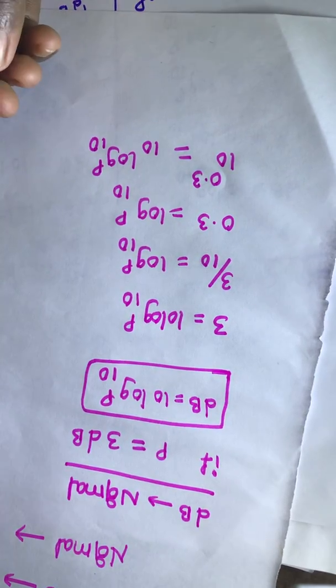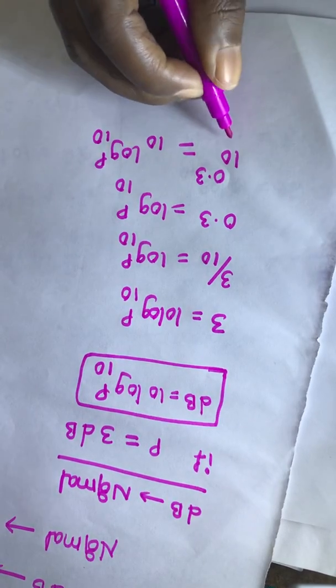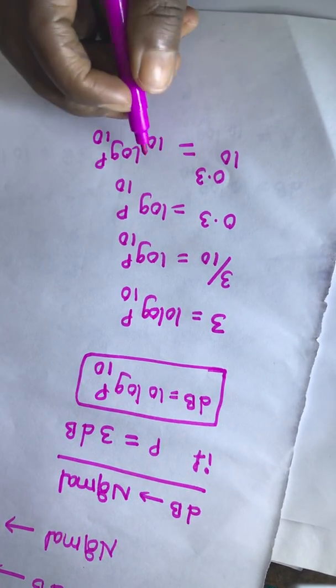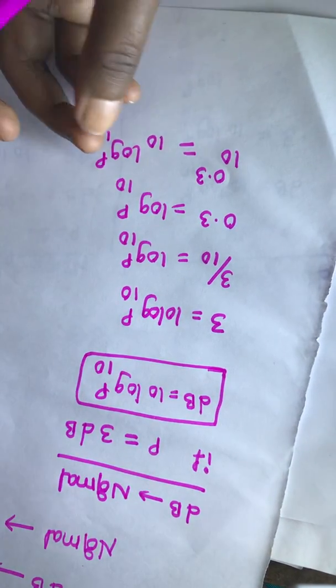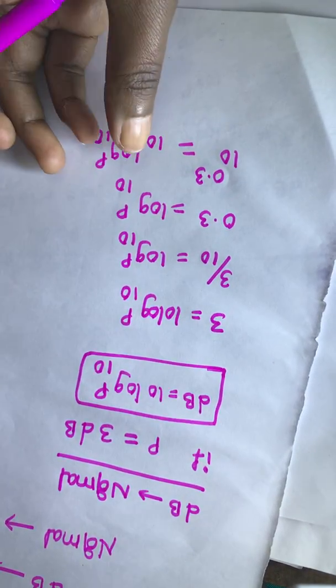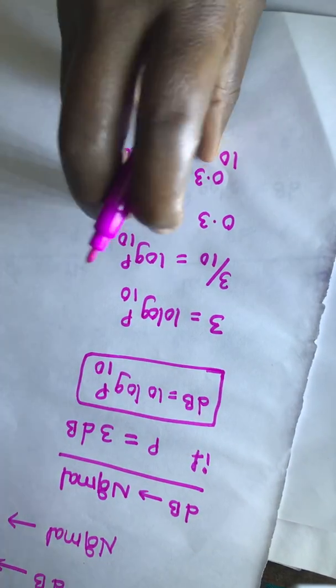This we learnt from logarithmic rules that is if 10 power a is equal to 10 power b, means this both are same. a equal to b. That means 10 power of anything on both side.